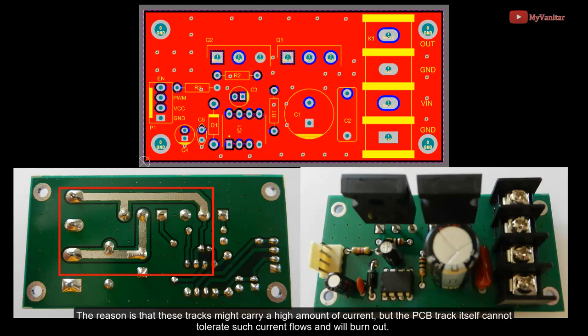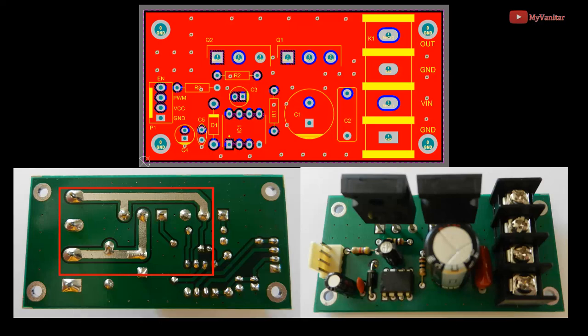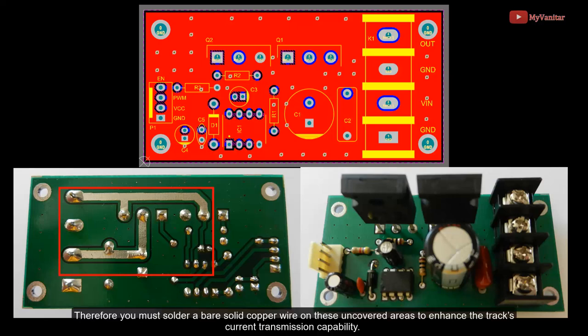The reason is that these tracks might carry a high amount of current, but the PCB track itself cannot tolerate such current flows and will burn out. Therefore, you must solder a bare solid copper wire on these uncovered areas to enhance the track's current transmission capability.